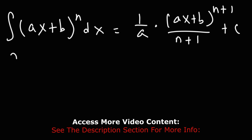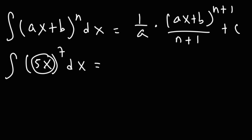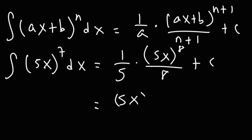For example, the integral of 5x raised to the 7th power: the 1 over a represents the reciprocal of the derivative of what's inside. The derivative of 5x is 5, so a is 5. We add 1 to 7 to get 8, then divide by 8. This gives 5x to the 8th power over 40, plus c.